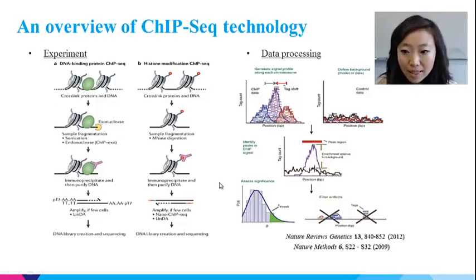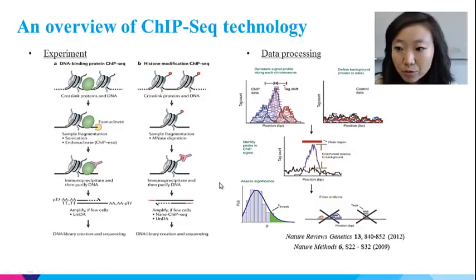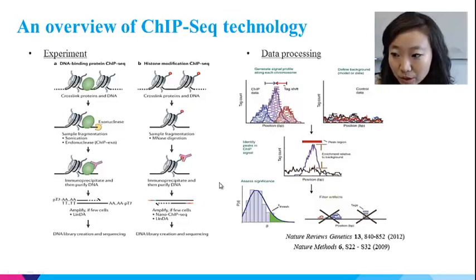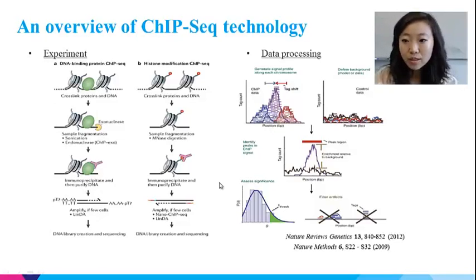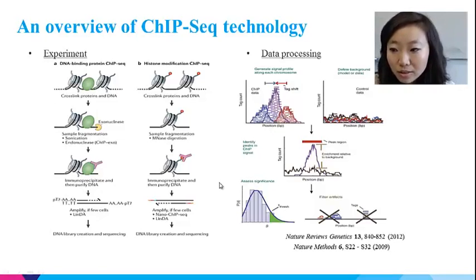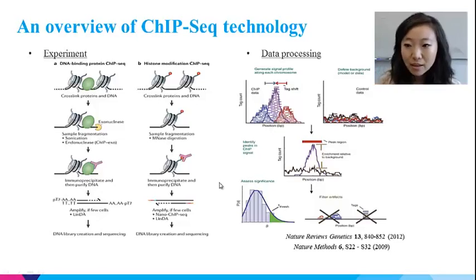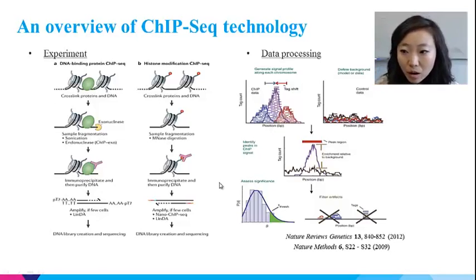Therefore, in recent years, it becomes routine to perform control experiments using non-specific antibodies or randomly digested DNA samples. Similar to the RNA-seq procedure, the short sequences will first be aligned to the reference genome. The CHIP-seq short reads are usually called tags. ELAND, MACS, Bowtie, BWA, and SOAP are among the most used algorithms for sequence alignment.